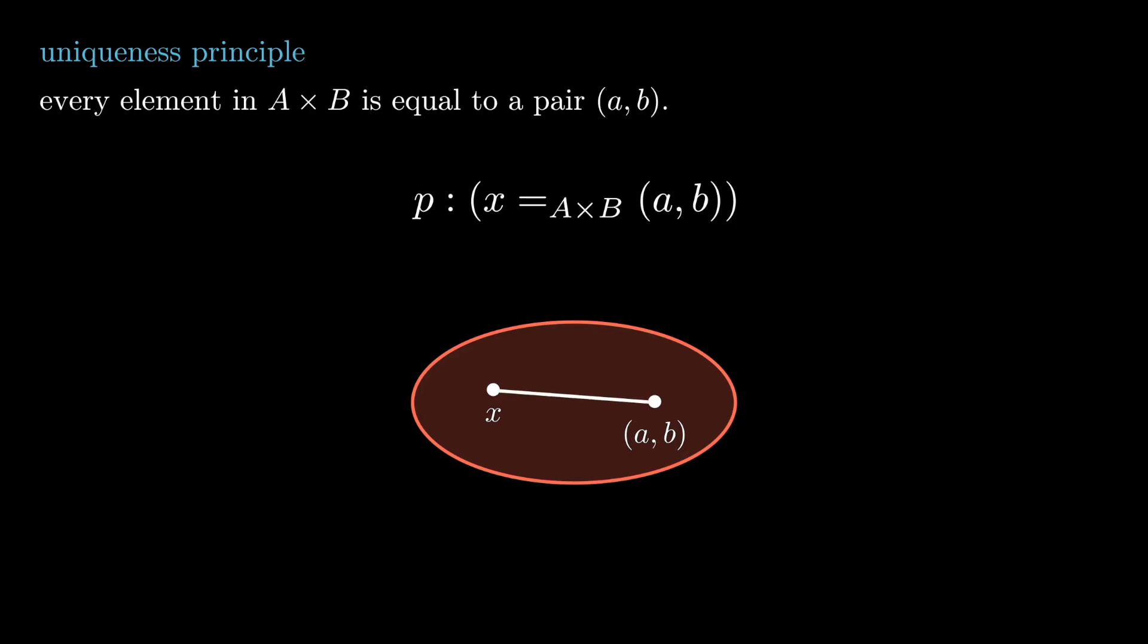Now, it is immediate to see the subtlety I was alluding to before. Just because X and A comma B are equal, it doesn't mean that they are the same element, just that there exists a path connecting them.